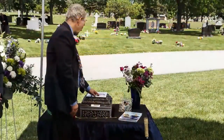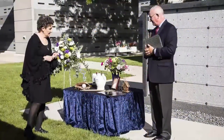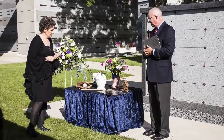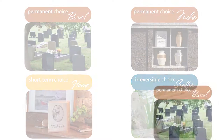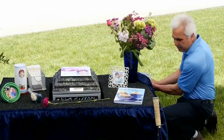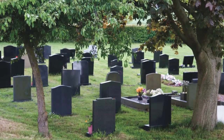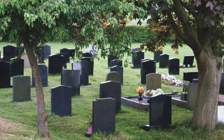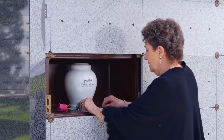An important choice you'll need to first make is the final resting place for your loved one's cremated remains. Cremation provides several options for the placement of the cremated remains, but it is important to consider the impact of your disposition decision on future generations. Burying an urn in a cemetery remains a popular choice for families — it provides a permanent resting place where family and friends can freely visit. Some families place the urn in a columbarium niche, providing a location where they can pay their respects.